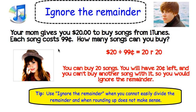A tip for ignoring the remainder: you are going to use ignore the remainder when you cannot easily divide the remainder and when rounding up doesn't make sense. This isn't easily divisible, that is why it fits this rule. And also, we couldn't round the remainder up. So in this circumstance, you are going to ignore the remainder.